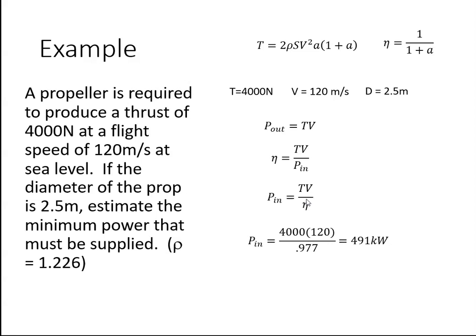I just plug in the values: the 4000, the 120 meters per second, and the efficiency of 0.977 which we just calculated. This tells me that we would need an engine with a power rating of 491 kilowatts.